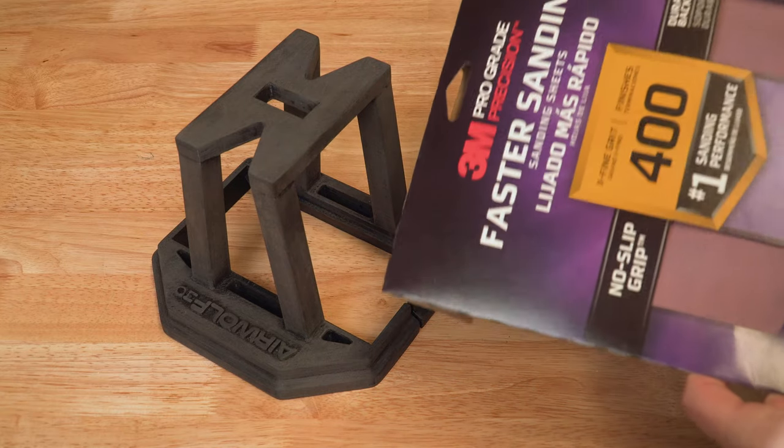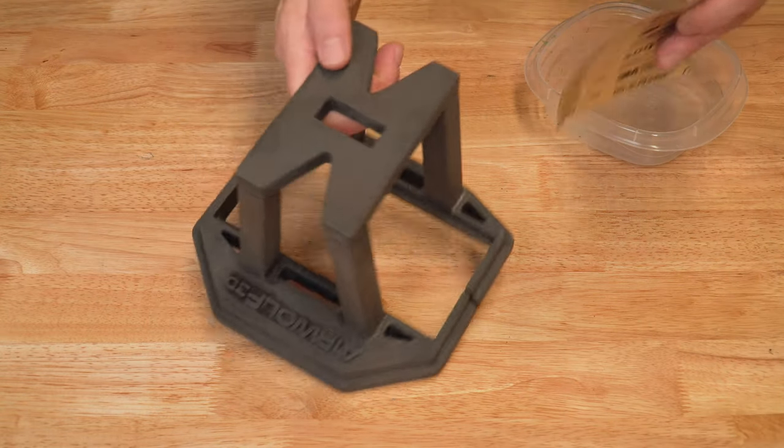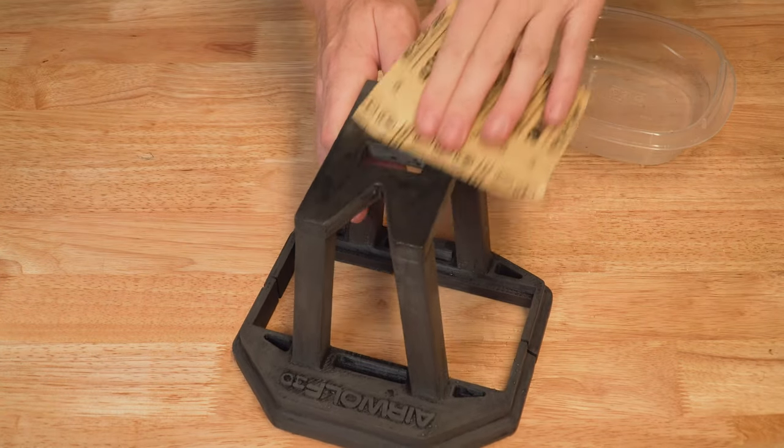Move up to finer sandpaper and once you move past 200, wet the sandpaper before using it. This will help prevent plastic debris and buildup within the sandpaper, as well as give the part a nicer surface finish.